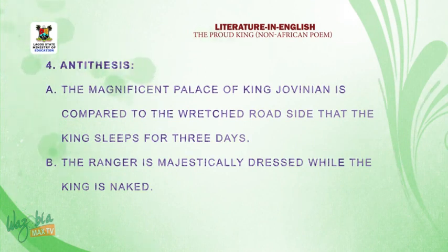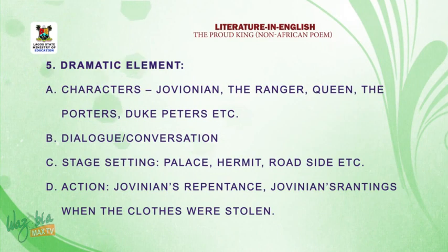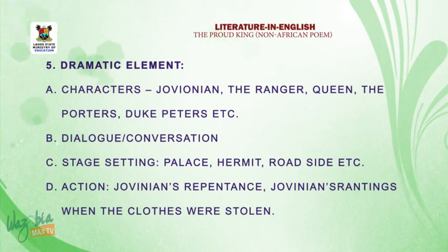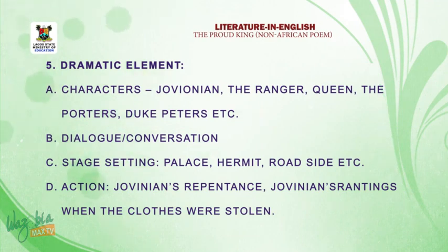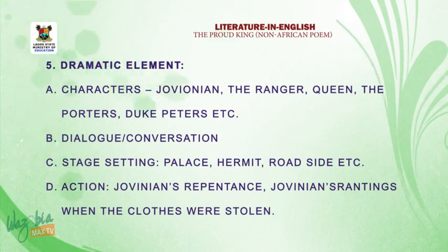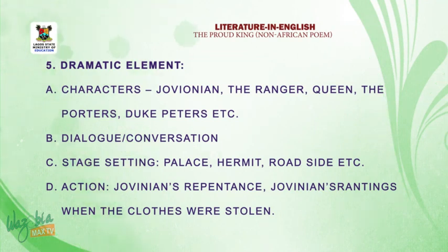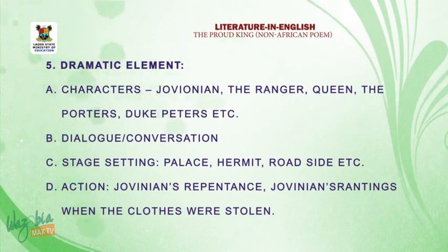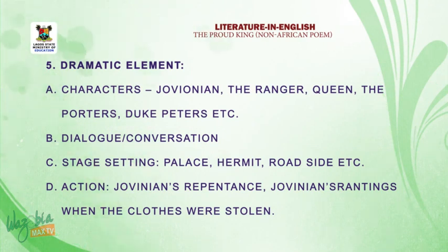The entire poem can be dramatized, which is why we have dramatic elements. The dramatic elements include characters such as King Jovenian, the ranger, the queen, the porter, Duke Peters, Squire, Cristobal Green, the priest, and so on. Another dramatic element is the use of dialogue through conversation — the conversation between the ranger and King Jovenian reads as if characters are on stage performing their specific roles.